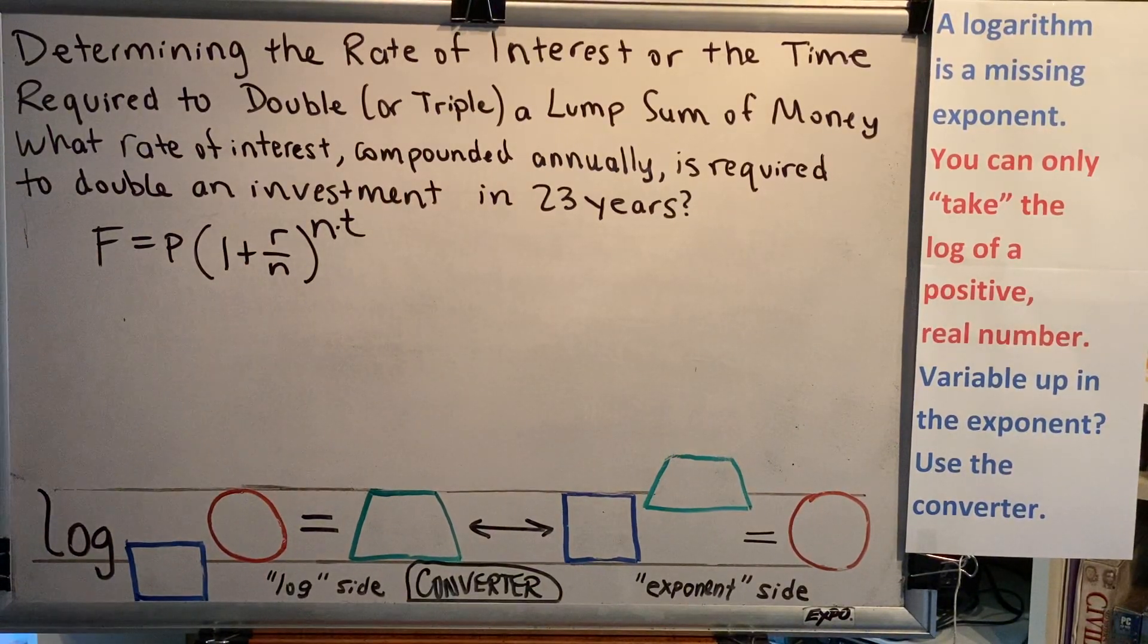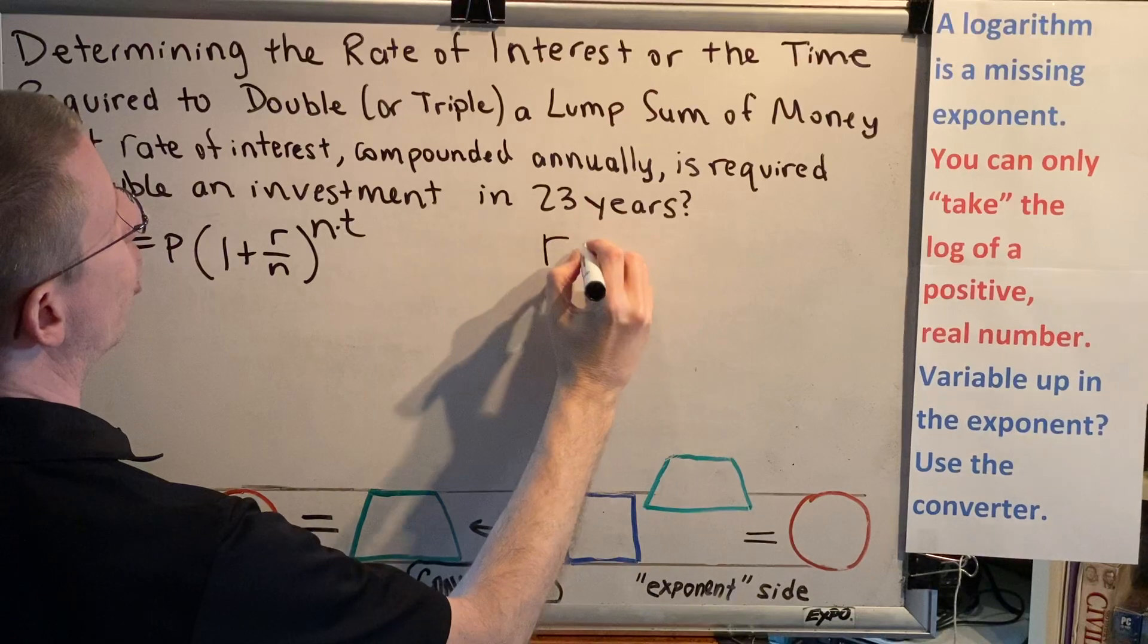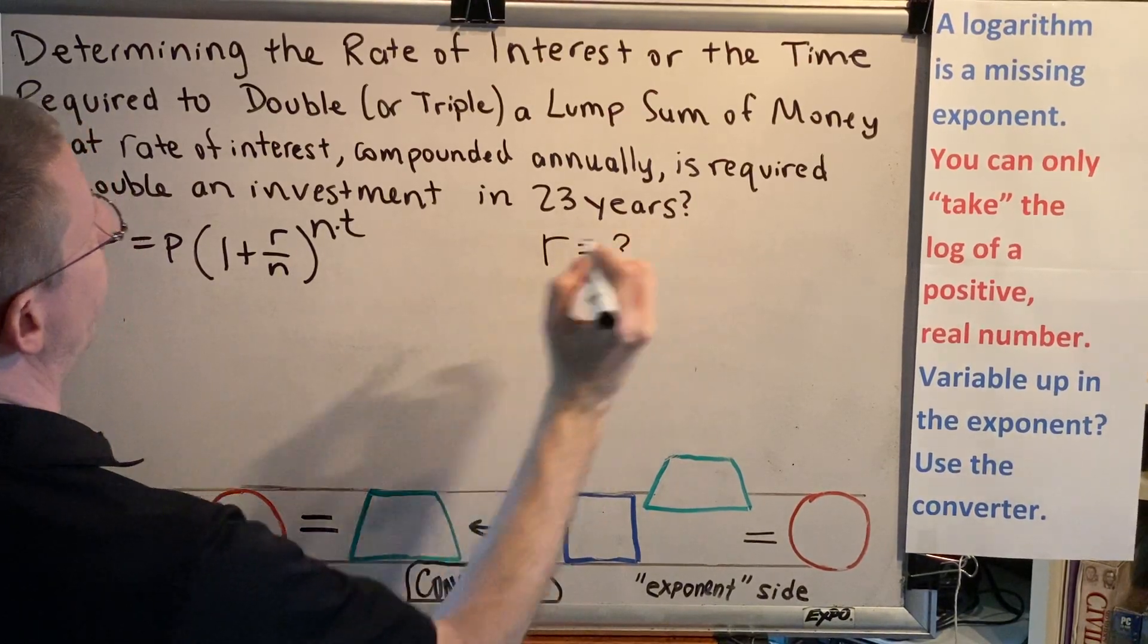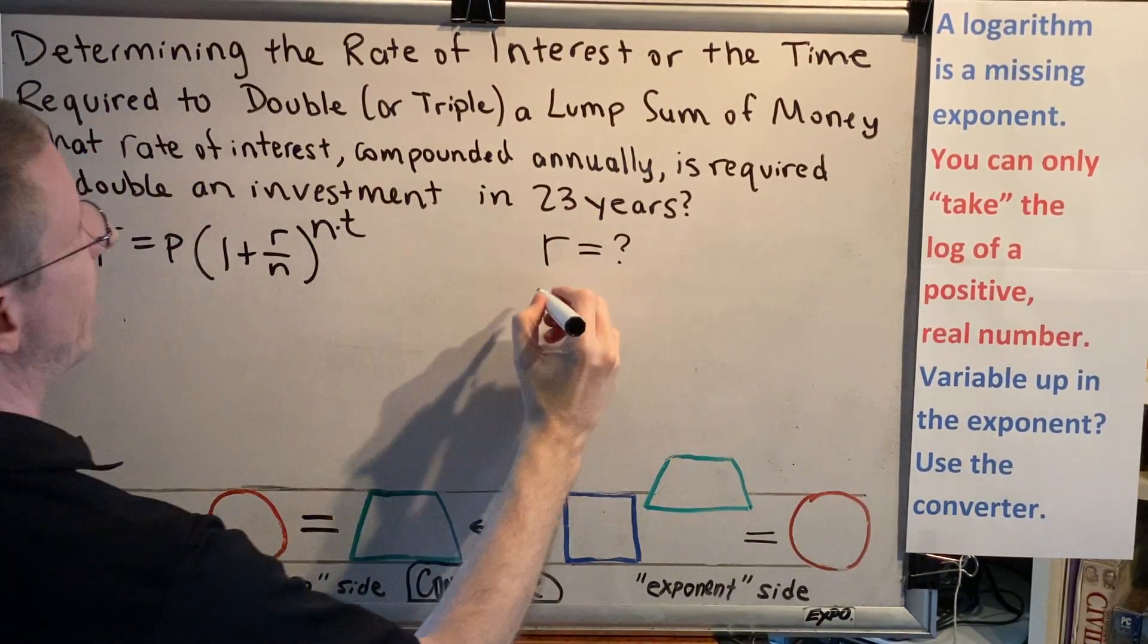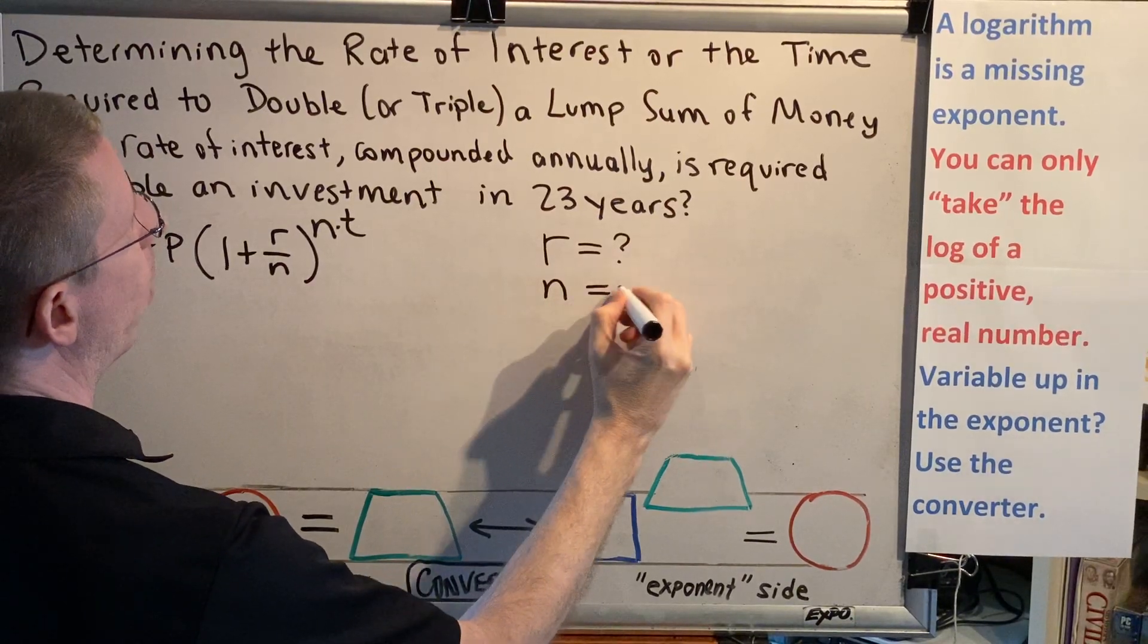What rate of interest? So that means we're trying to find R. R is our variable this time. Compounded annually tells me N equals 1.